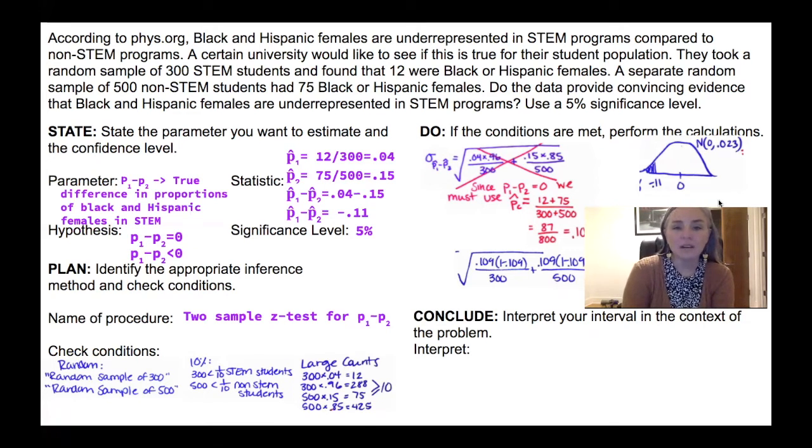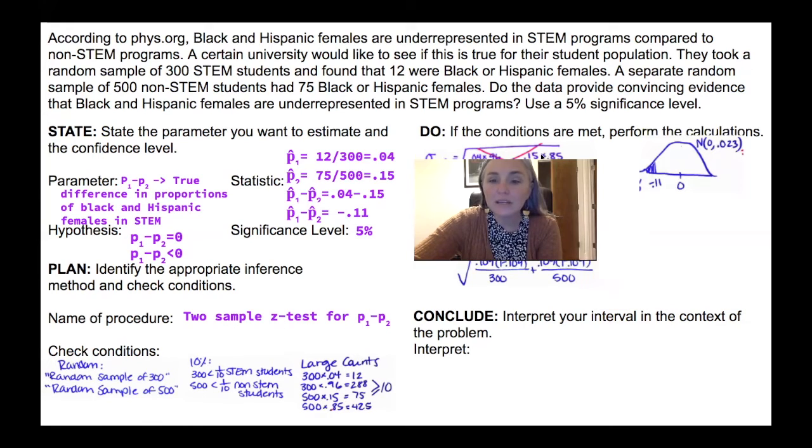So we had 12 out of 300 in STEM that were black or Hispanic females and 75 out of 500 that were black or Hispanic females. And we talked about how to set it up. I'm not going to talk through that because we already talked through it.